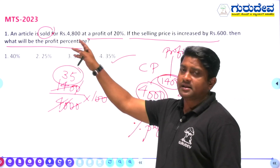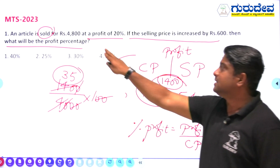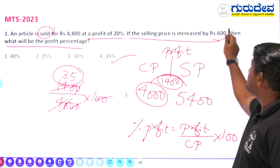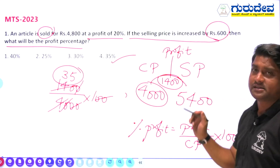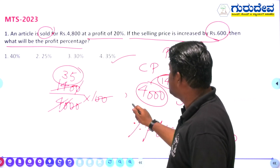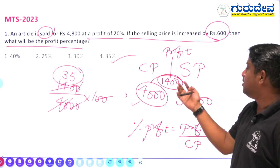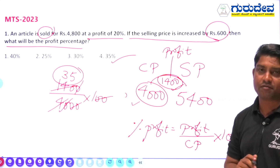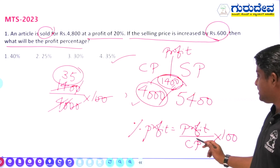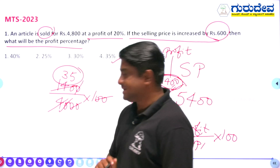So the approach was: we were given two selling prices — the initial one and the new one after increasing by ₹600. From that we found the cost price, then the profit, and substituted both values in the formula to get the profit percentage.